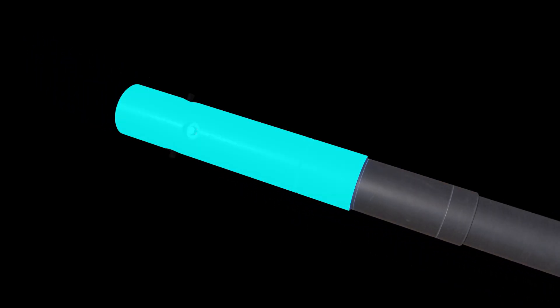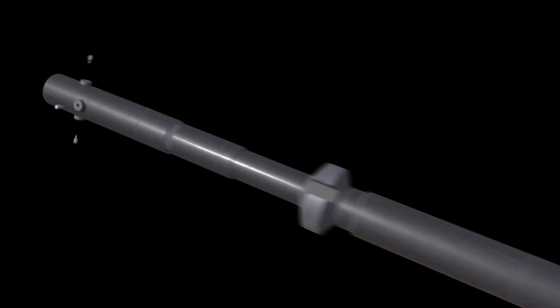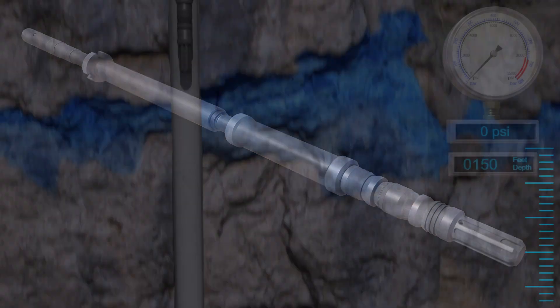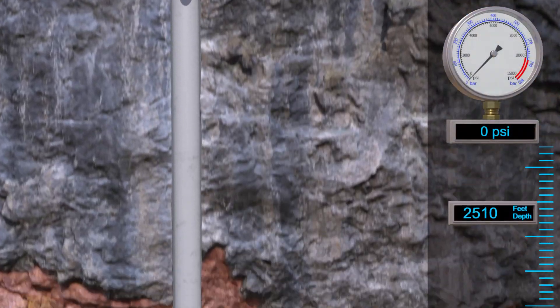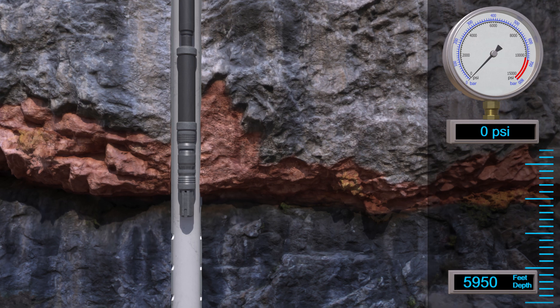Above the setting tool is the abrasion perforator that is ball-activated to blast holes into the casing. Now let's run in the hole and we'll show you how our tool works. Once we're on depth, it's time to set the retainer.